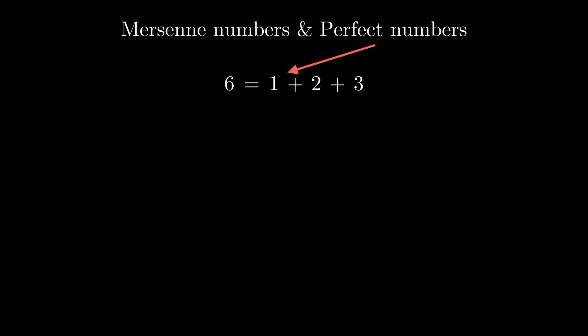So 6 is a perfect number, and 28 is also a good example. Euclid proved that if p is a Mersenne prime, then p times p plus 1 over 2 will be a perfect number.